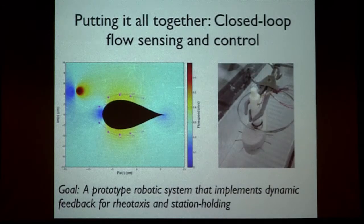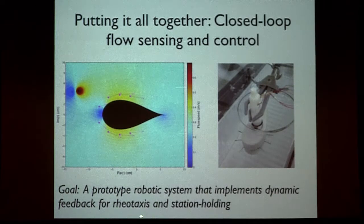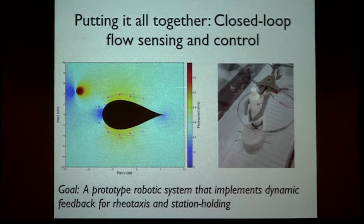The final introductory slide describes the overall system, involving all aspects of controls, material science, and biology. The outcome is a prototype robotic system that implements dynamic feedback for rheotaxis and station holding — rheotaxis being the tendency to orient upstream, and station holding being the tendency of fish to translate into the wake of a fixed obstacle. The prototype fish has an airfoil shape extruded in the third dimension to reduce 3D effects, and the motor control system is kinematic in nature because of the constraints of the gantry system.